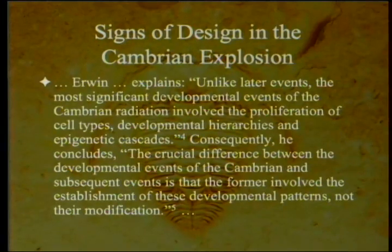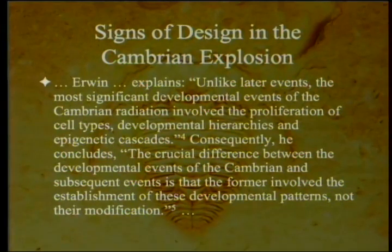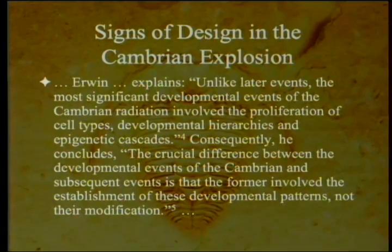This is a Reader's Digest version, so we've done some cuts to get it into less than an hour. Irwin explains: unlike later events, the most significant developmental events of the Cambrian radiation involved the proliferation of cell types, developmental hierarchies, and epigenetic cascades. Consequently, he concludes that the crucial difference between the developmental events of the Cambrian and subsequent events is that the former involved the establishment of these developmental patterns, not their modification.